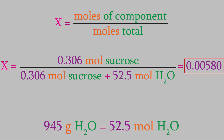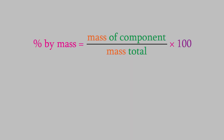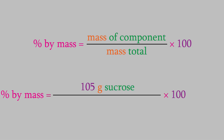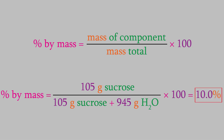Finally, let's figure out the mass percentage of sucrose. We already know we have 105 grams of sucrose, and in the denominator we put the total mass of the sucrose and the water. Multiplying by 100 gives us a result of 10.0%. So our bottle of Coke is 10% sugar by mass — that's a lot of sugar.